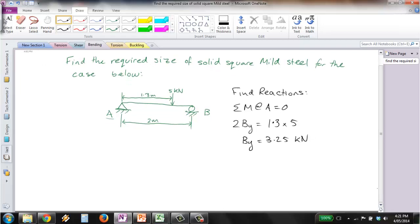Now to get the reaction at A, we just need to do sum of forces in the y direction equal to zero. So that means we get Ay equal to 5 minus BY, which means Ay is equal to 1.75kN.